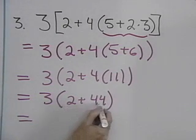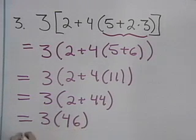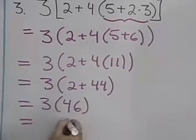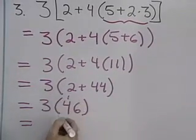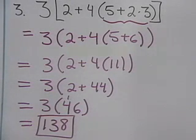Now inside the parentheses, 2 plus 44 is 46. And now 3 times 46. 3 times 6 is 18, 3 times 4 is 12, and 1 is 13. So I have 138.